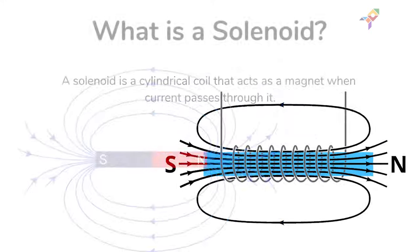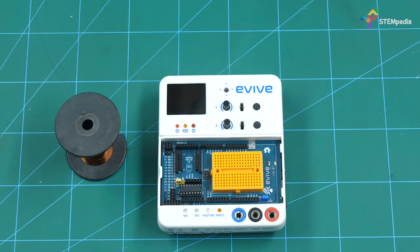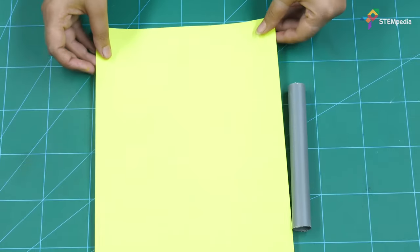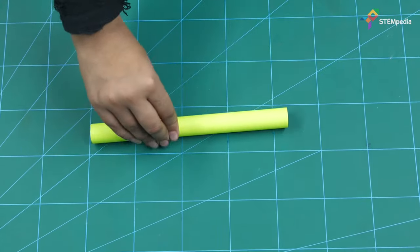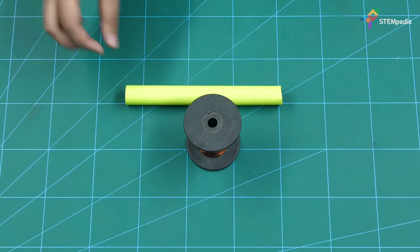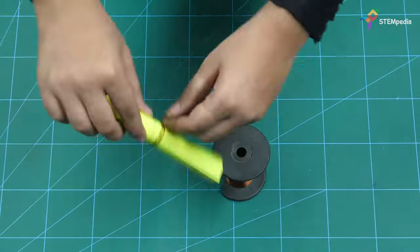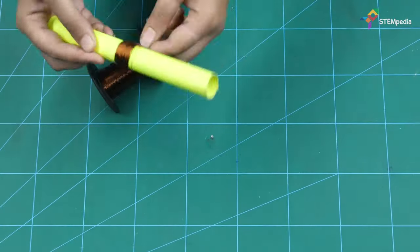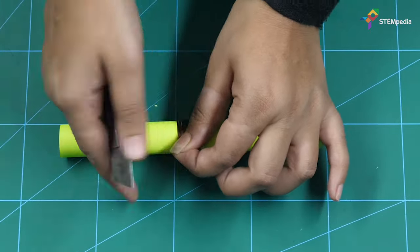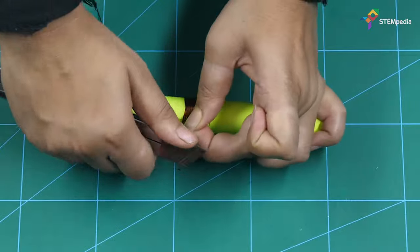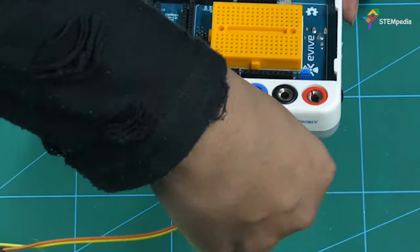Let's start by making a solenoid. A solenoid is a cylindrical coil that acts as a magnet when current passes through it. Here we are using a PVC pipe and copper coil to make the solenoid. Wrap the colored paper around the PVC pipe, then wrap the copper coil around it. Connect the ends to Evive's graph pin to close the circuit.